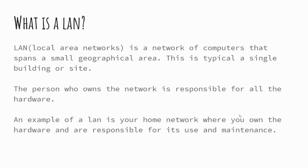With a local area network, the person who owns the network is responsible for all of the hardware. So at home, if your network goes down, it's down to you to sort it out. Your internet provider will likely give some support, but if you're running your own network with your own cabling and one of those cables gets broken, it's down to you to replace it.